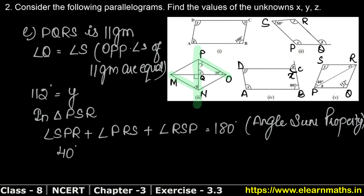The triangle is specified inside the figure. R angle is x, and S angle is y which equals 112 degrees. So: 40 plus x plus 112 equals 180 degrees.